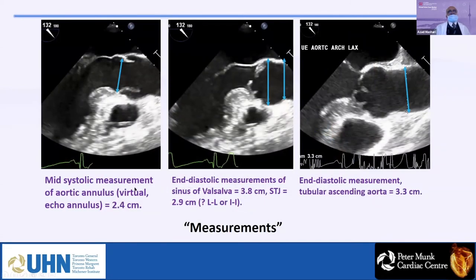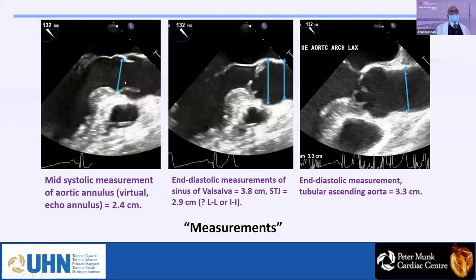For aortic valve and aortic root problems, we measure the aortic annulus, sinus of Valsalva, sinotubular junction (STJ), and tubular aorta. Per guideline recommendations, the aortic annulus should always be measured at mid-systole with the aortic valve open. In this patient, the aortic annulus was 2.4 cm, which is normal — the normal range being 2.2 to 2.8.